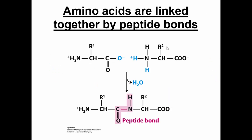How are amino acids linked together? They're linked through peptide bonds. As we lose water through a condensation reaction, we link the carboxyl group on one amino acid with the amino group on the next, losing water through a condensation reaction, and we form a peptide bond. That's why proteins are often called polypeptides — poly coming from the Greek word for 'many' — many peptide bonds.